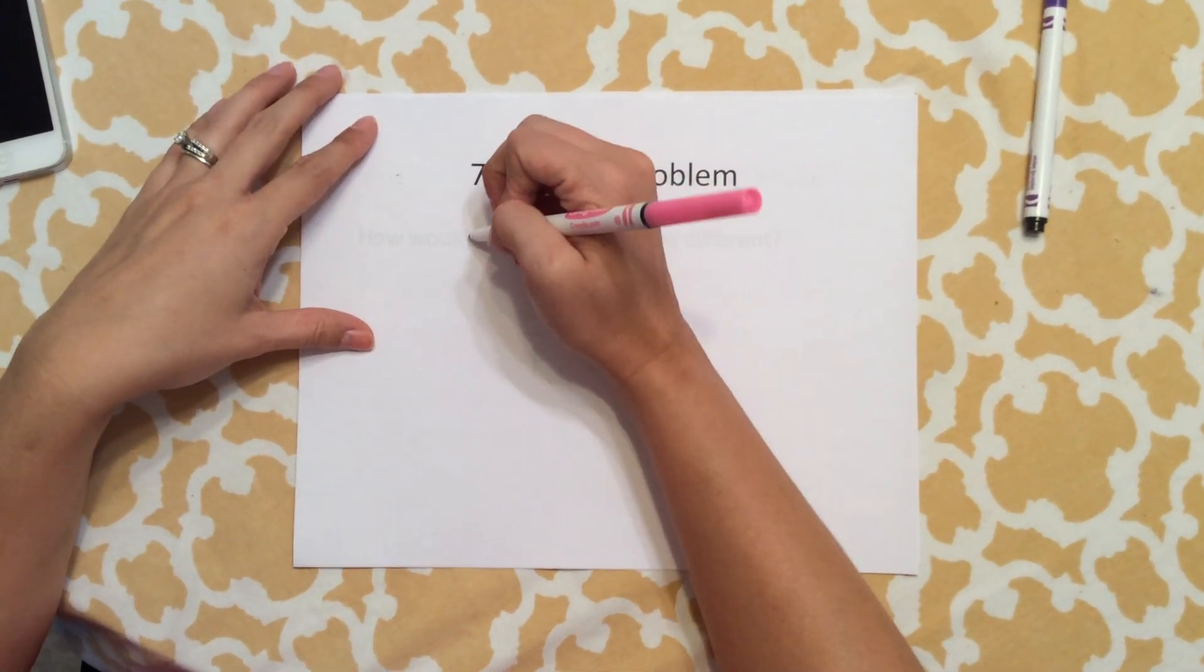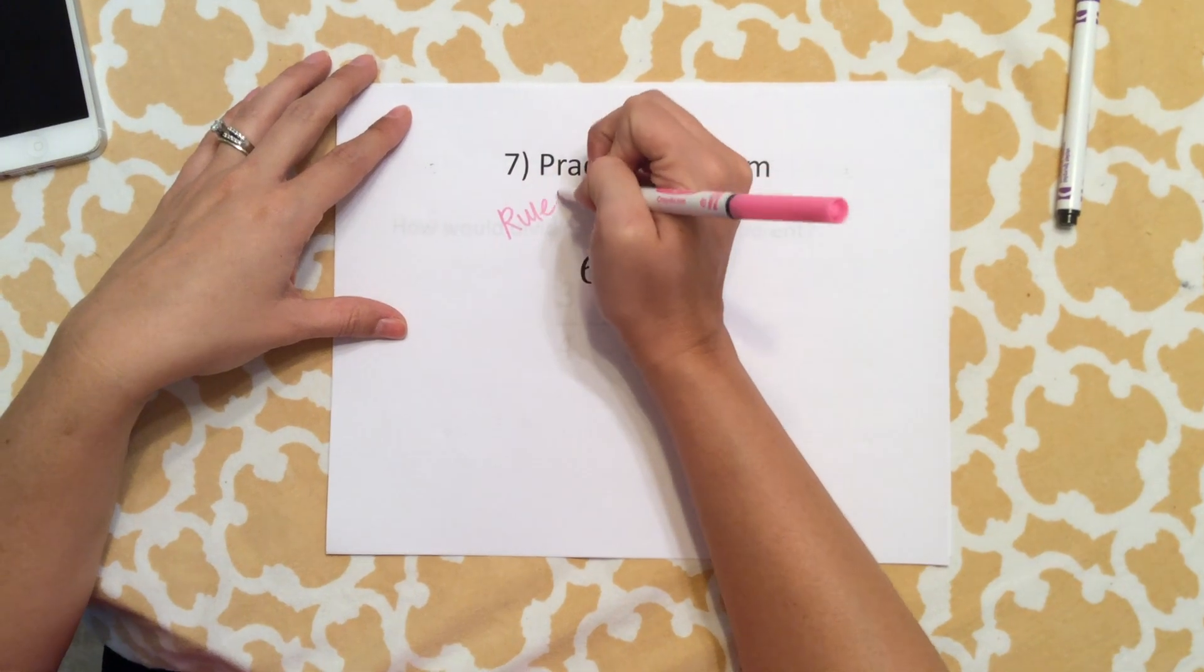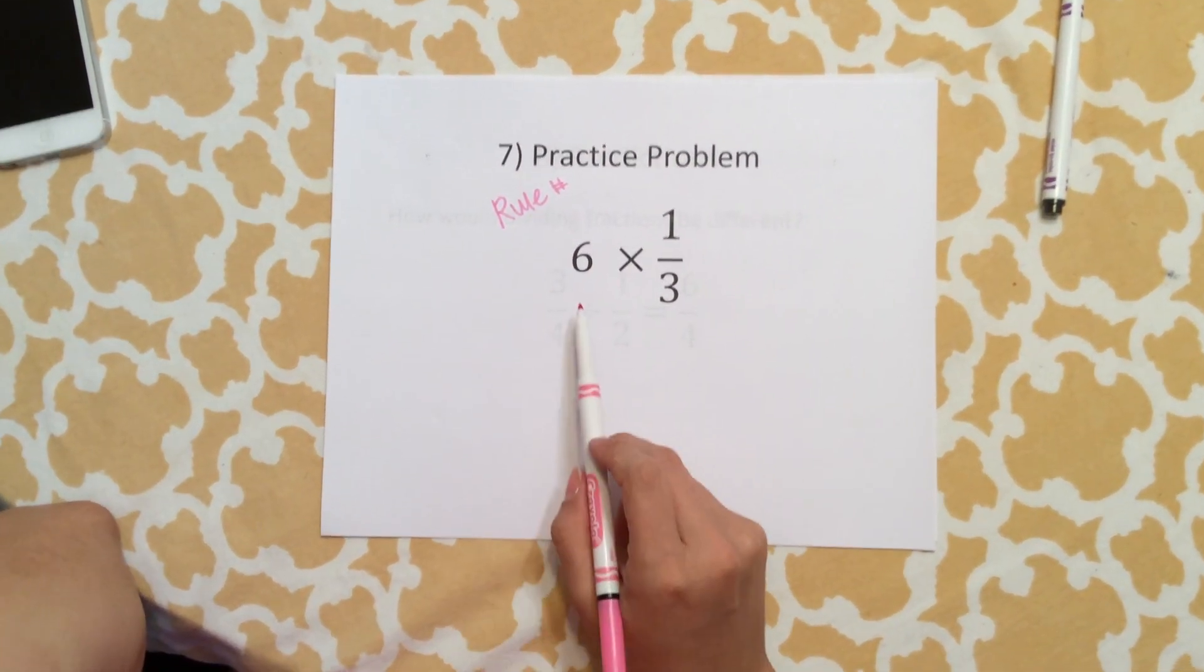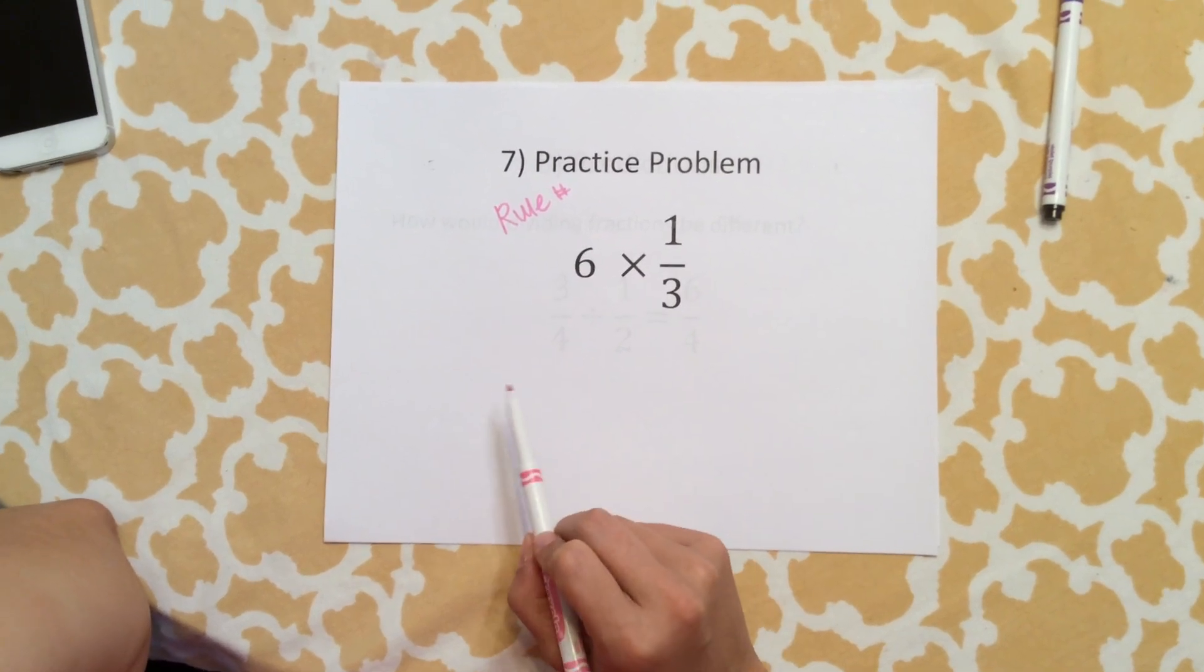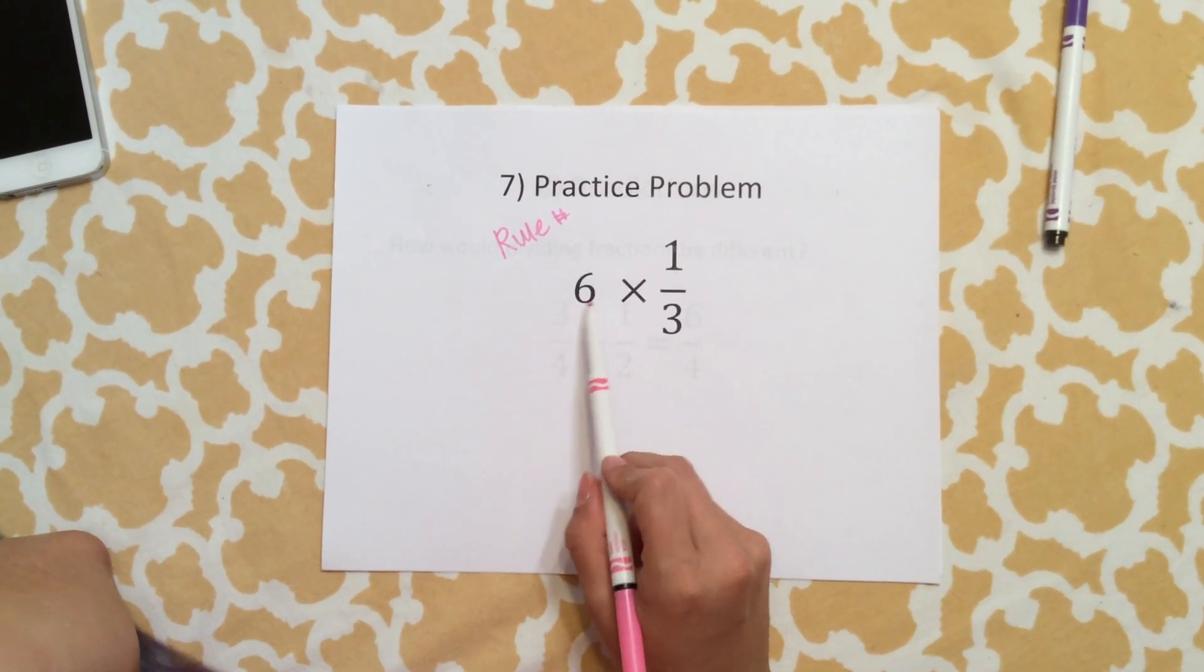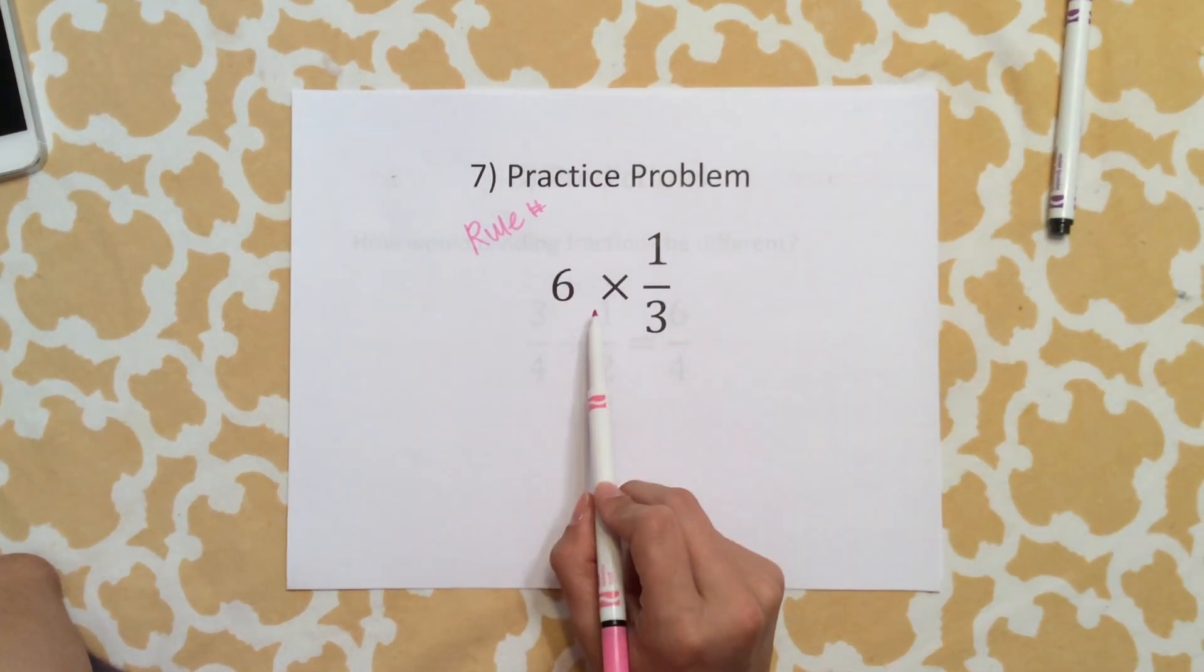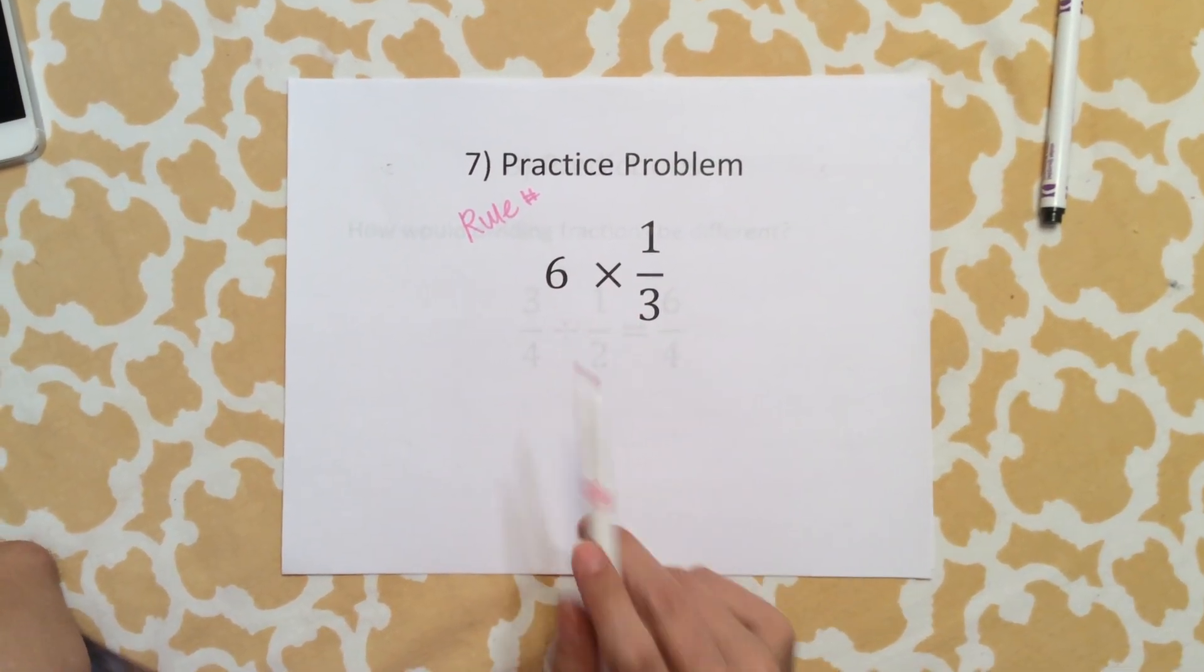Our last practice problem: which rule would it follow and then multiply 6 times 1/3? We have a whole number. We need to change this whole number to a fraction and then multiply that fraction times 1/3.